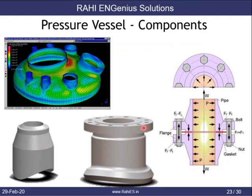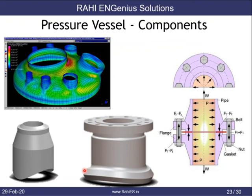Nozzles and flanges come in many types — they can be radial, offset, or angular, and can be classified as radiographable or non-radiographable. They can also be defined as set-on or set-through nozzles. A set-on nozzle is welded onto the cylinder without a through-penetration in the thickness. A radiographable nozzle has a small extension to form a butt-welded joint with the parent component, whereas a non-radiographable nozzle uses a corner joint construction.